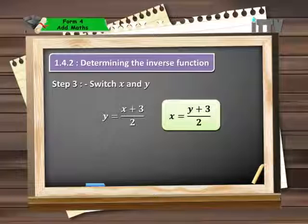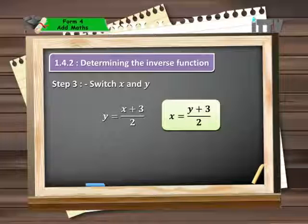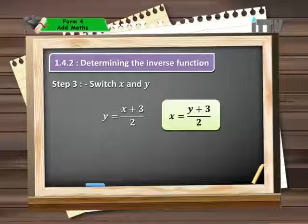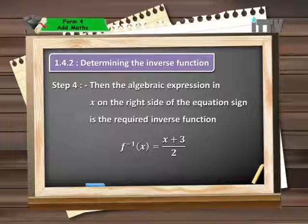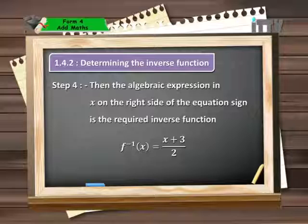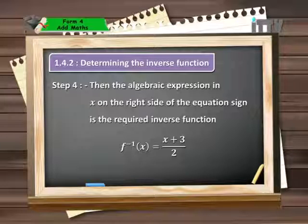The next step is very crucial, and that is to switch x and y. That means in place of x you write y, and in place of y you write x. We had found that x equals (y plus 3) over 2, and when we perform this step of switching, it will now become y equals (x plus 3) over 2. Finally, the algebraic expression in x on the right side of the equation is the required inverse function. We can change back the symbol y into the function notation for inverse, which is f⁻¹(x), and it equals (x plus 3) over 2 in this example.